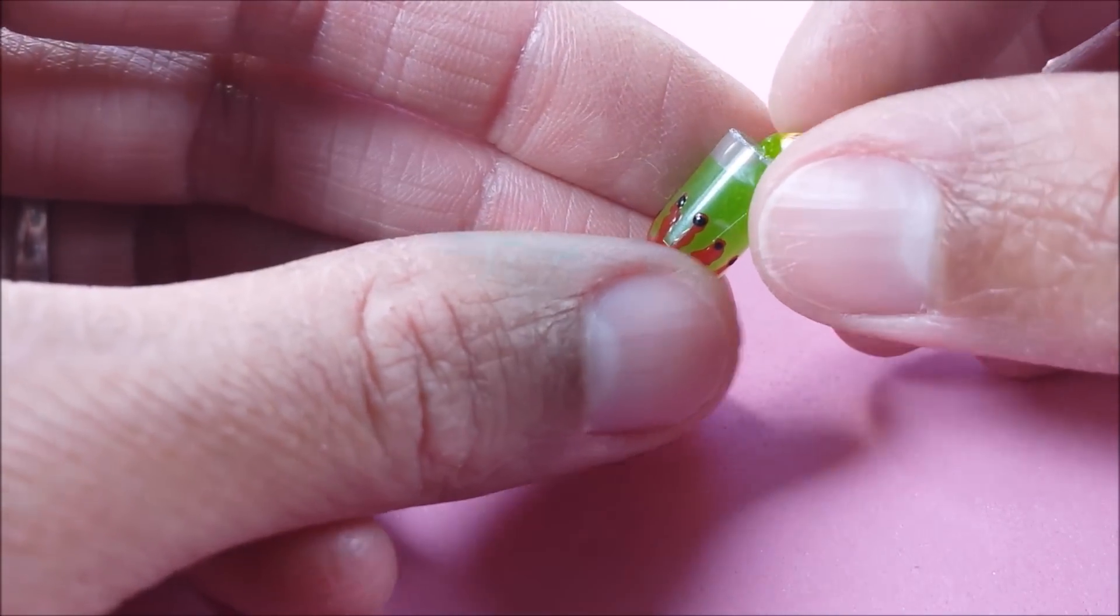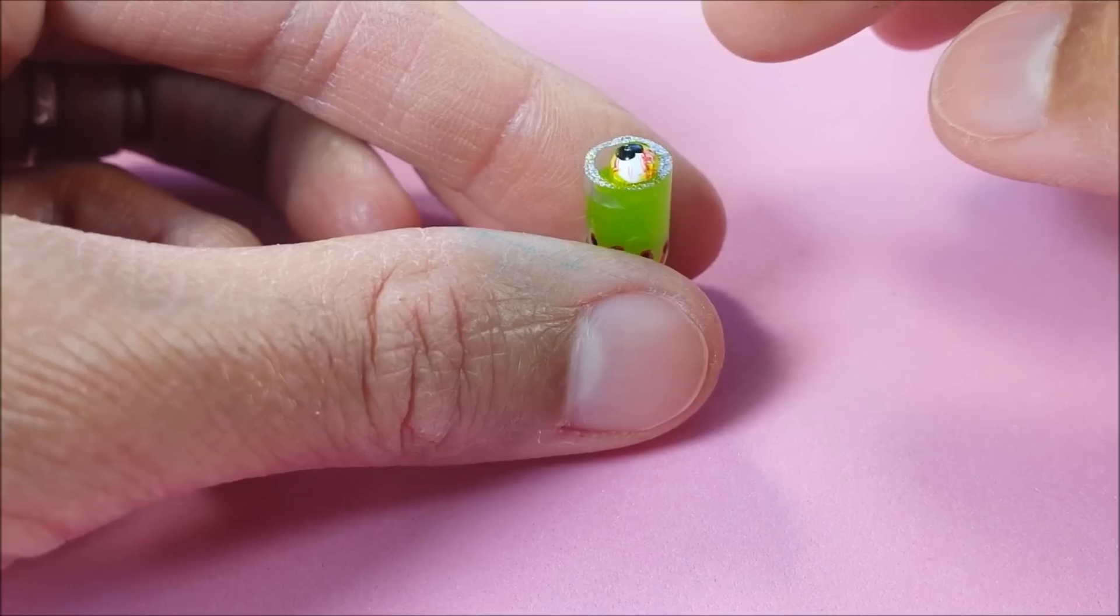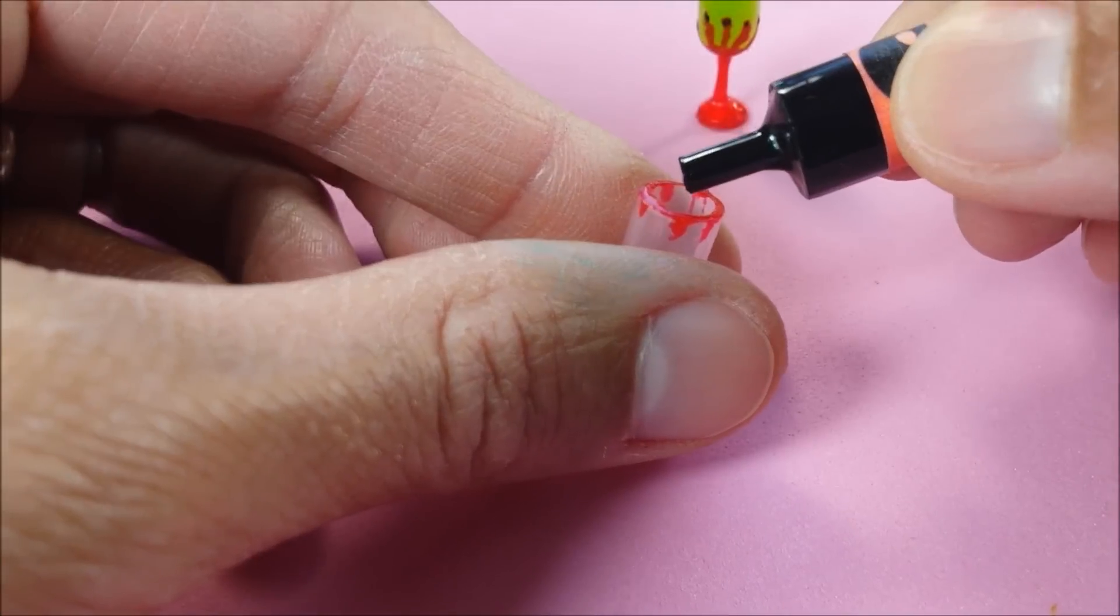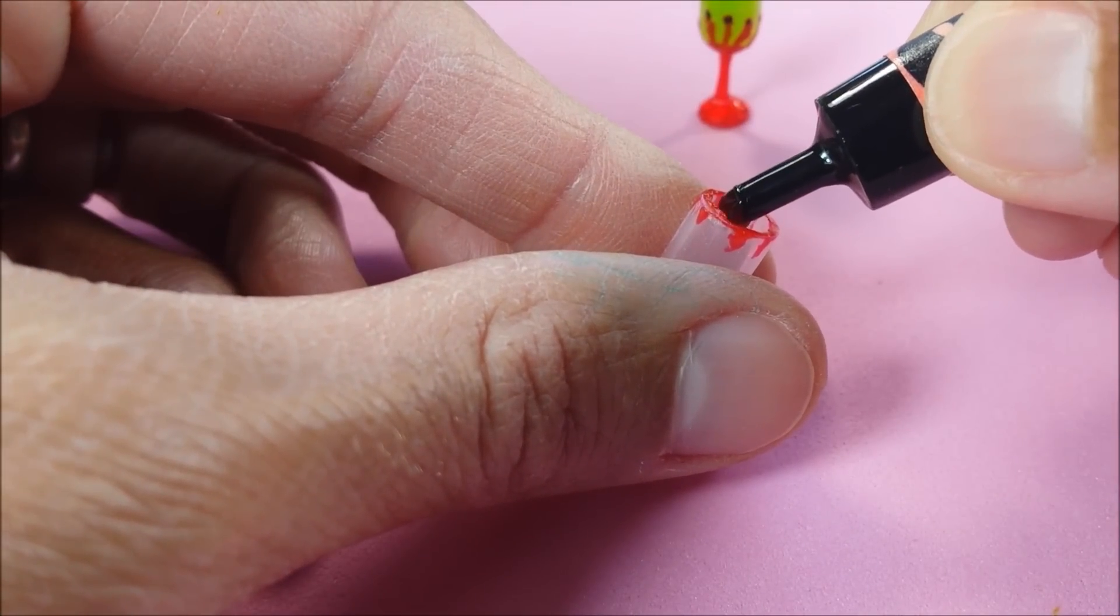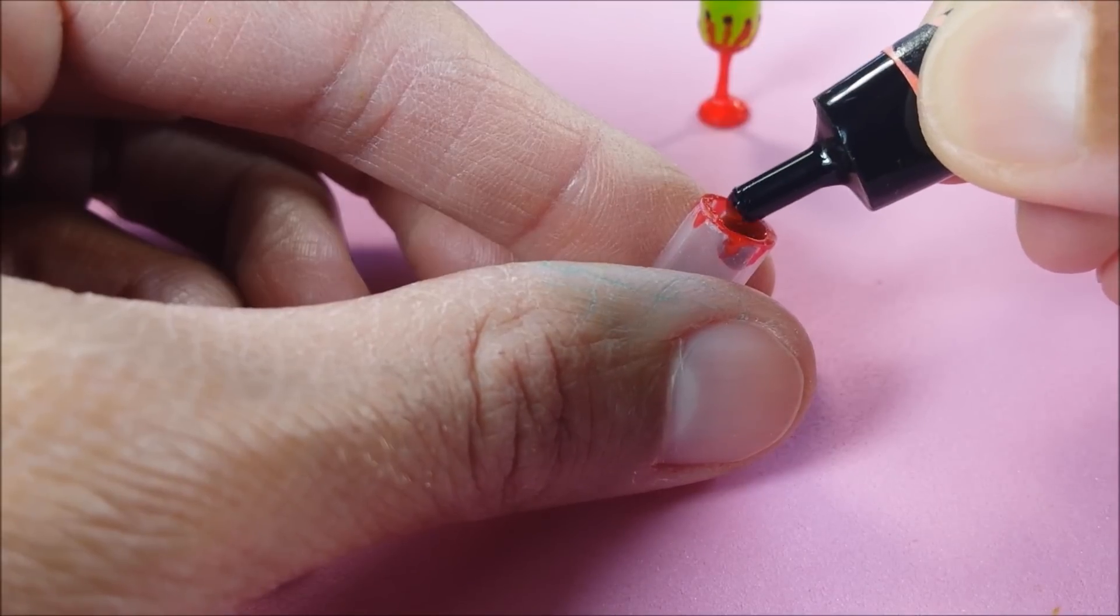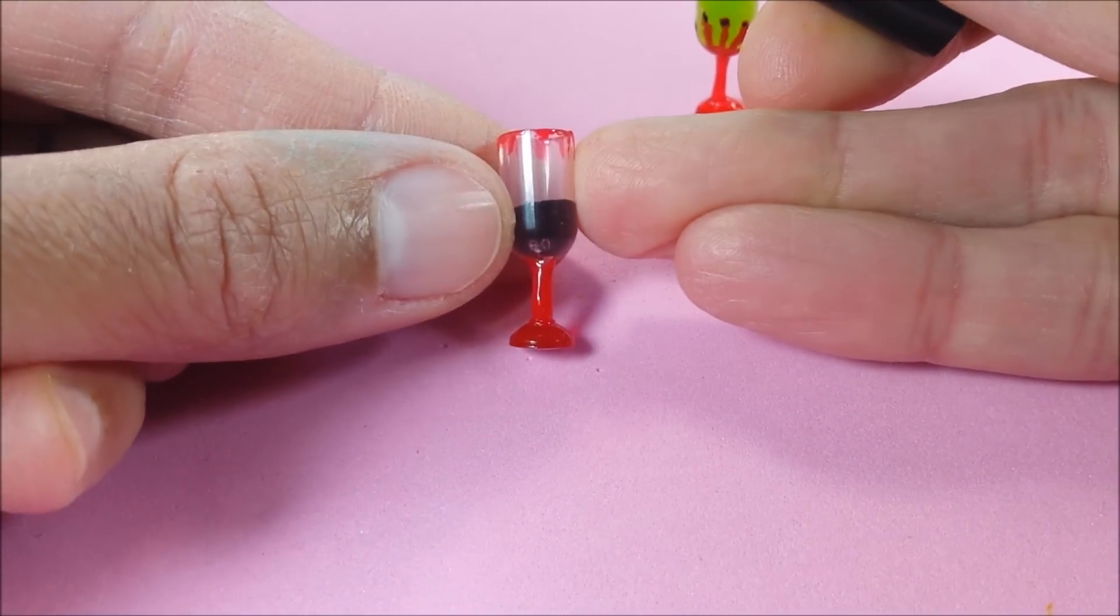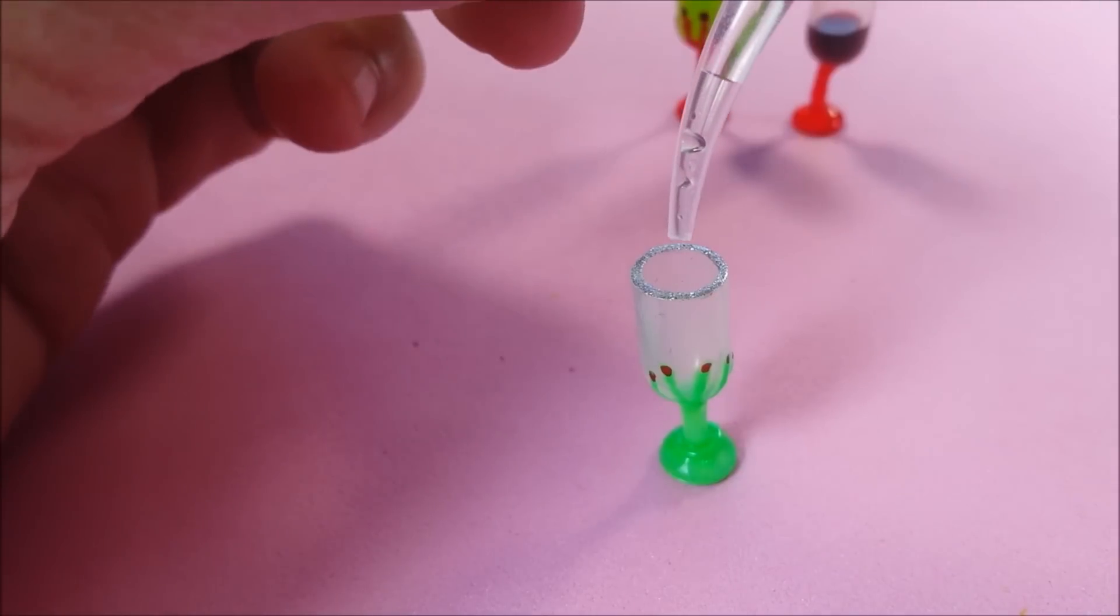Of course your slime will dry out, so you eventually want to put it back into a ziploc bag or something like that. Or you can just add some wine. This is just red and green food coloring mixed together.